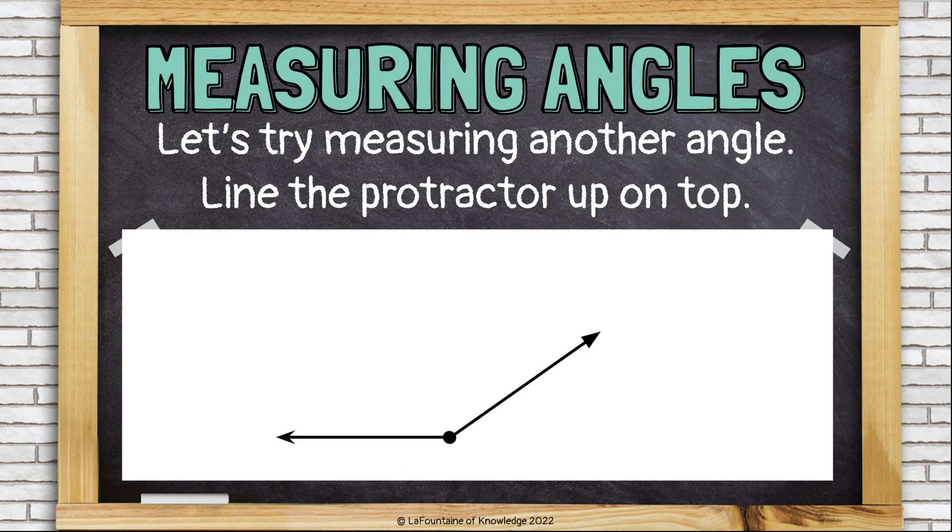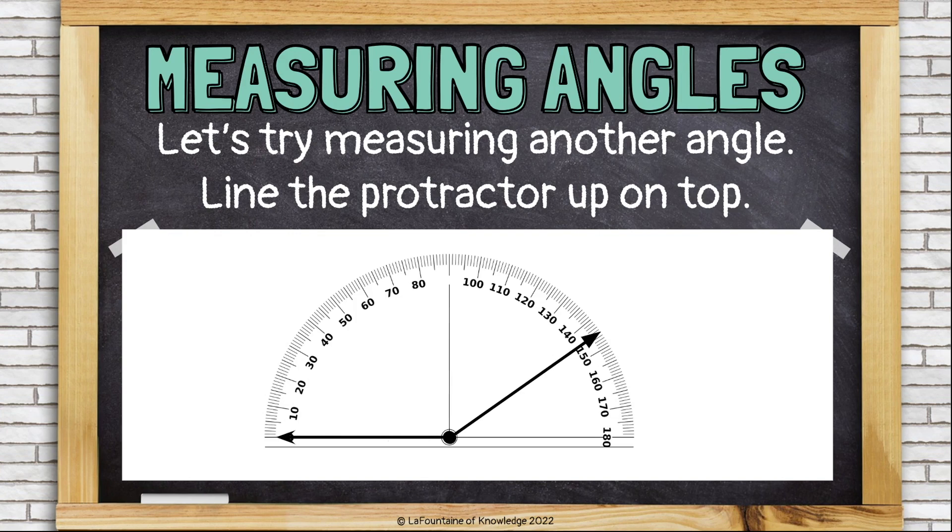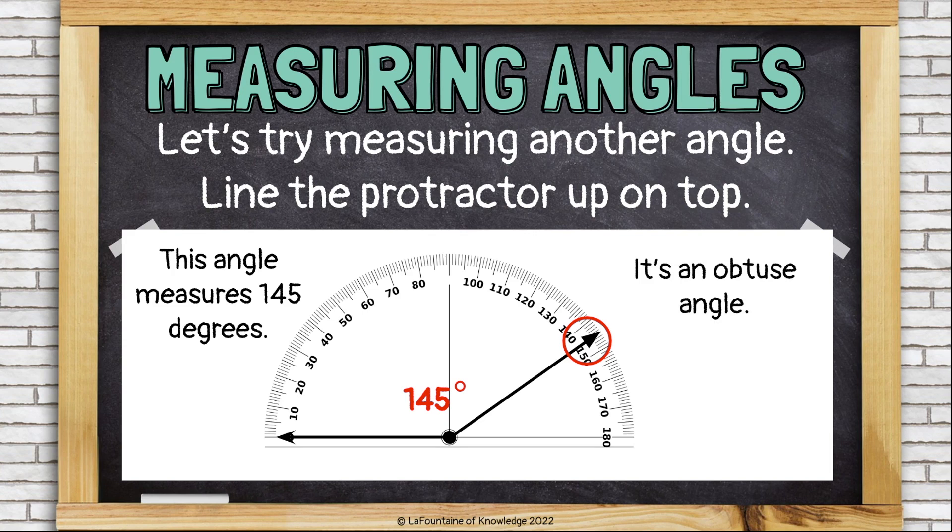Let's try measuring another angle. Line the protractor up on top. One ray points to zero. The vertex is lined up in the circle. And the other ray tells us the angle's measure. This time, it measures 145 degrees. It's an obtuse angle.